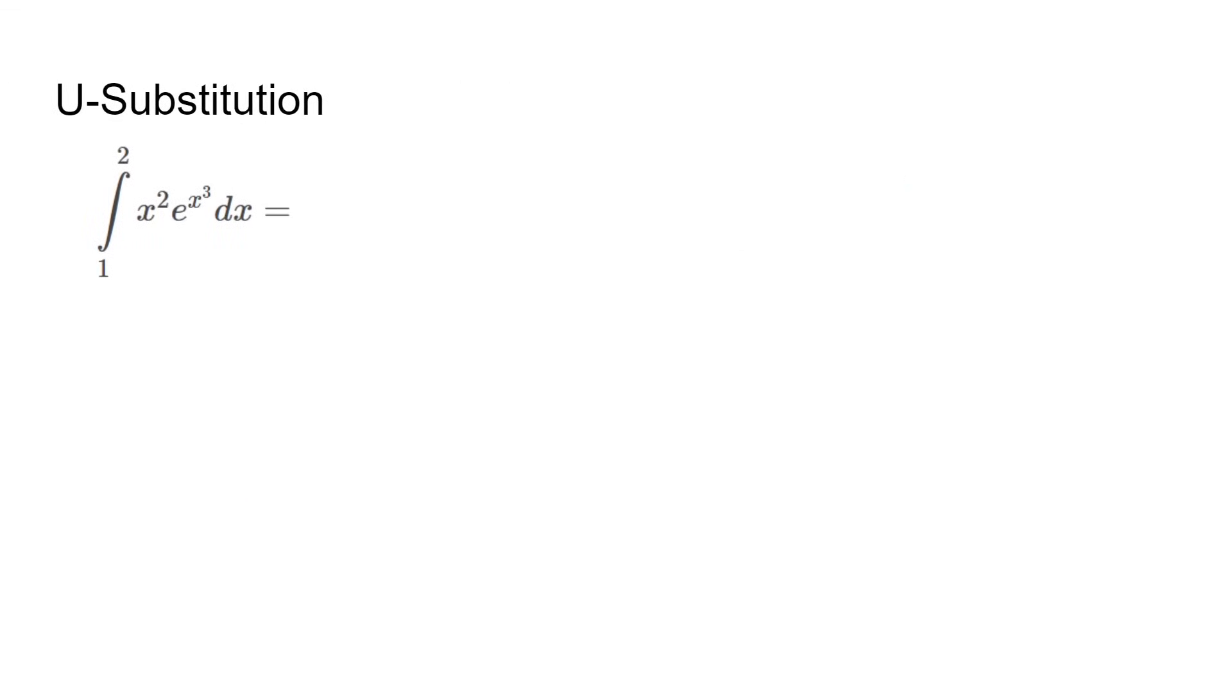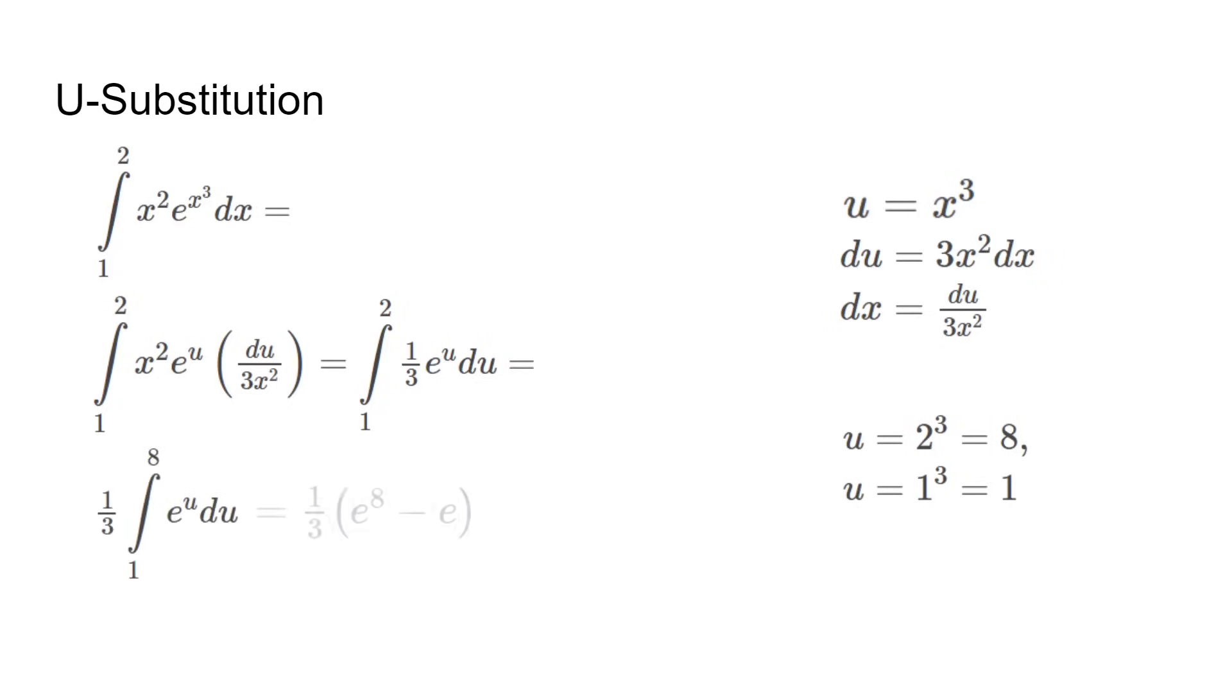Another use of u-sub is to cancel out parts of an integral. This time, we will look at an example with a definite integral instead. We use x cubed as u since it is the most inner part, then divide by 3x squared. It cancels out the x squared and we get 1 third times the integral of e to the power of u du. Normally, we can just use an antiderivative from 1 to 2 again. But since we use the u-sub, we have to plug in the bounds to u. It becomes 2 to the power of 3 and 1 to the power of 3. Our answer is e to the power of 8 minus e all over 3.